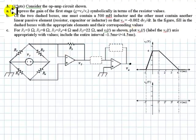This is question 3 of the 6 questions in the final exam. Consider the op amp circuit shown in Part A. Express the gain of the first stage symbolically in terms of the resistors values R1 through R5.